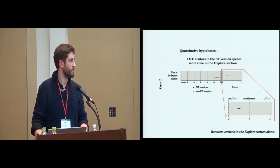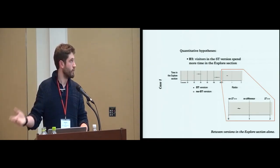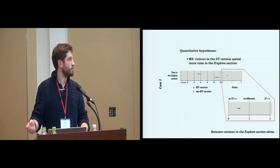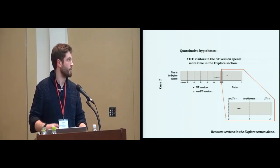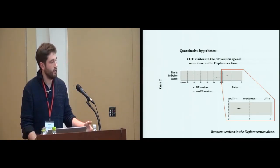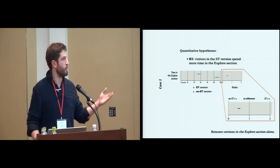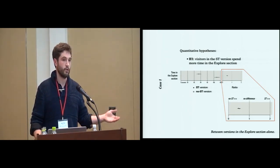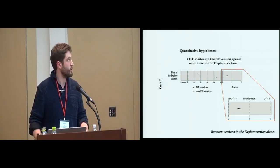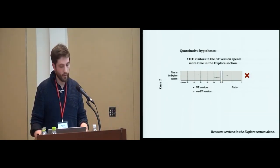To go quickly, just look at the ratio. If the point estimate is around one, there is no difference between the two versions. If it is below one and the confidence intervals do not overlap one, people in the no-storytelling version spend more time exploring.